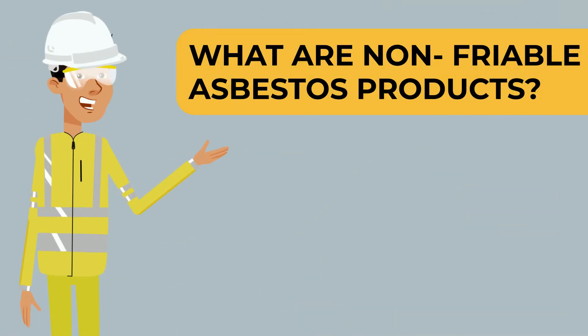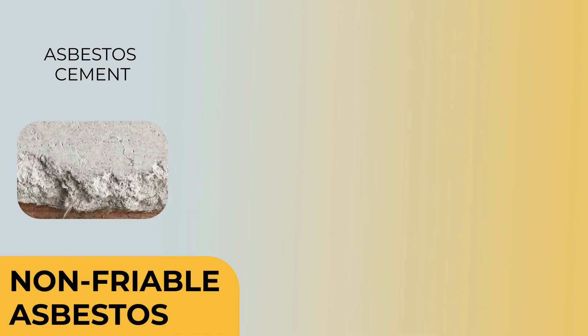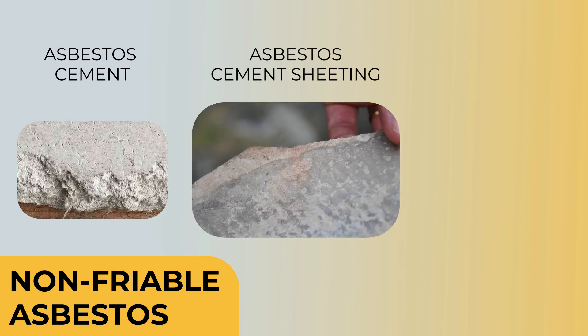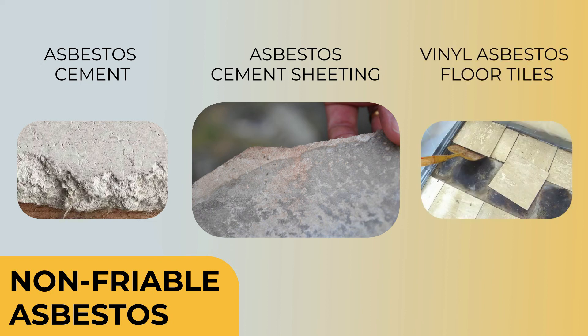Examples of common non-friable asbestos products include asbestos cement, asbestos cement sheeting also known as fibro, and vinyl asbestos floor tiles.